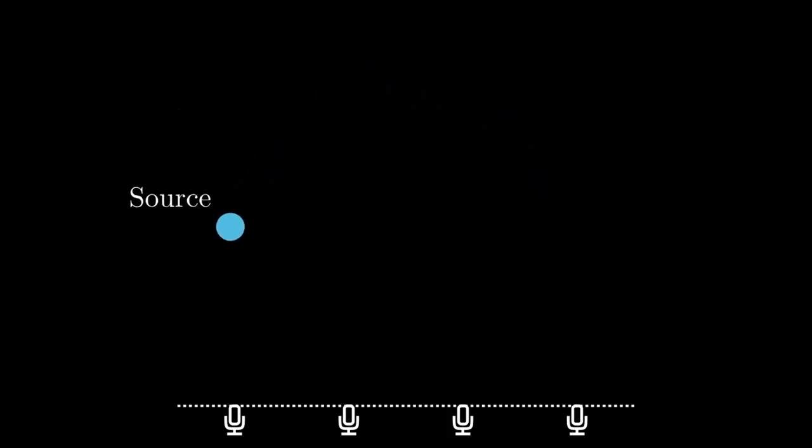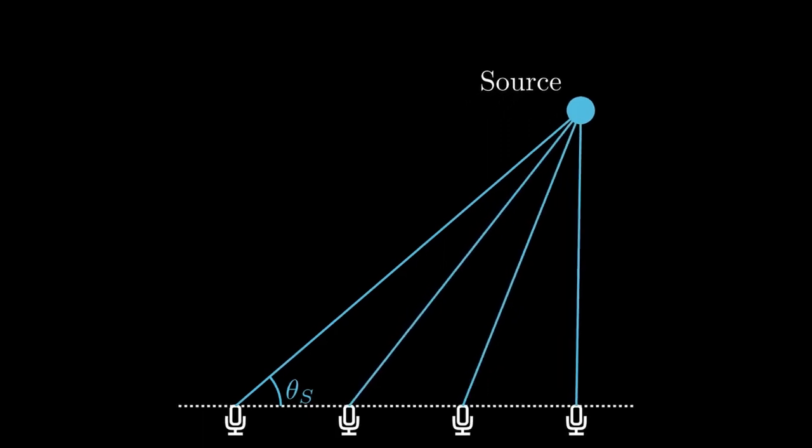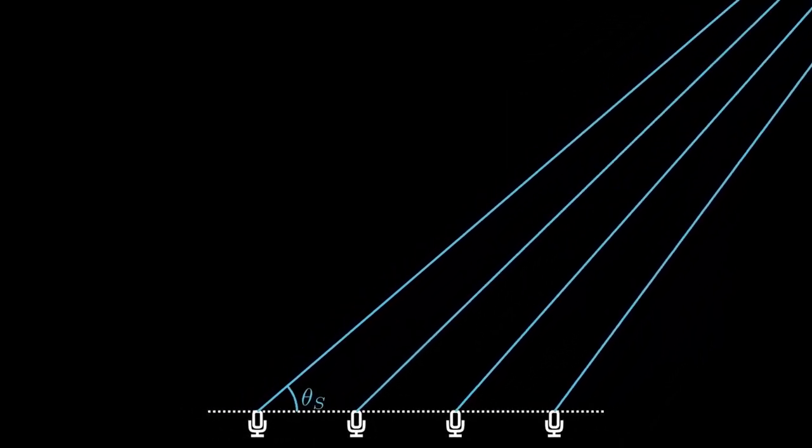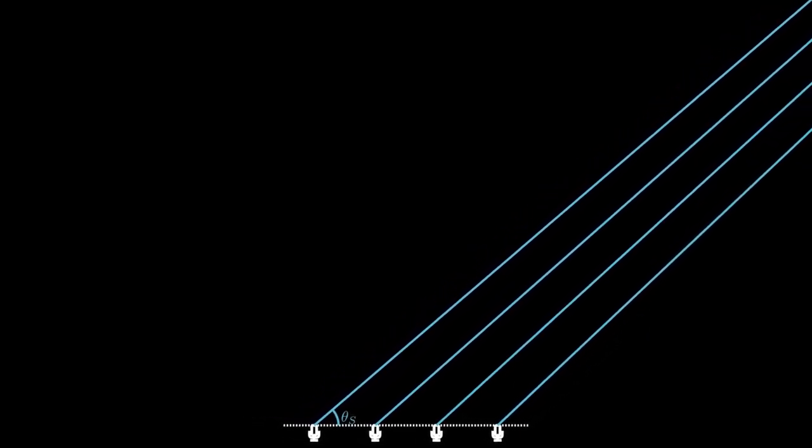Here, we assume that we know the location of the source. The angle theta between the array and the vector pointing in the direction of the source is usually called the direction of arrival, the DOA. If the source is close to the microphone array, located in the near field, the DOA will be different for each of the microphones. For practical reasons, we usually assume the source to be in the far field, meaning that the wave captured by the microphone array can be approximated by a plane wave.